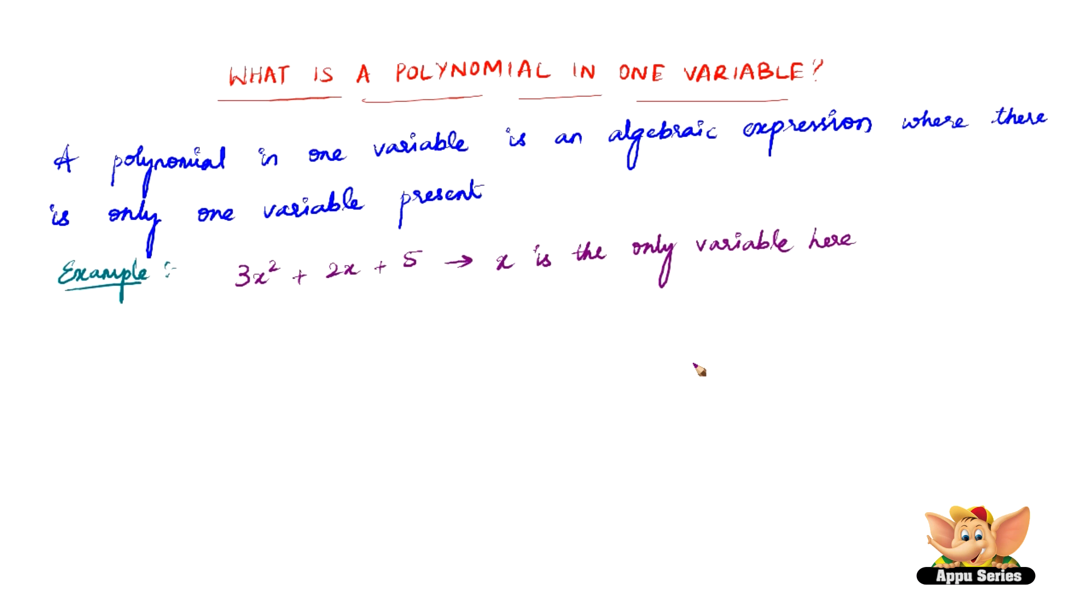Let us consider another example: 4y squared plus y plus 9. In this expression, y is the only variable present.